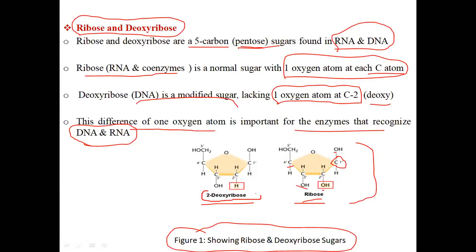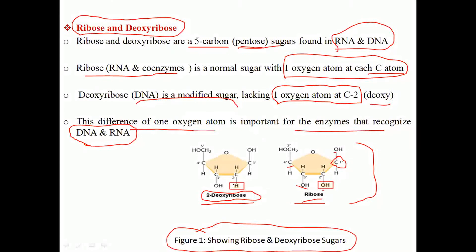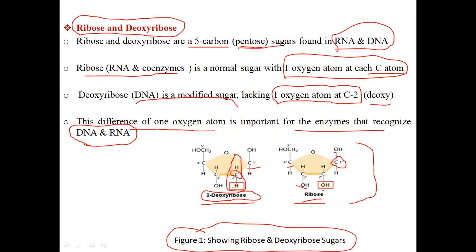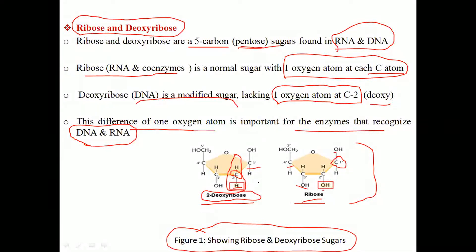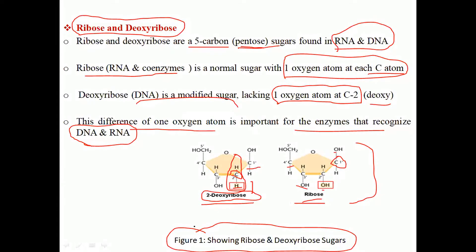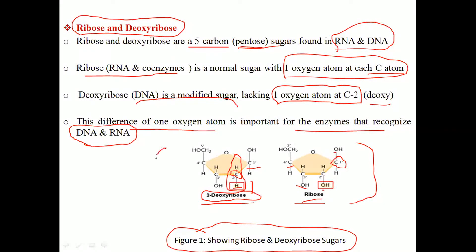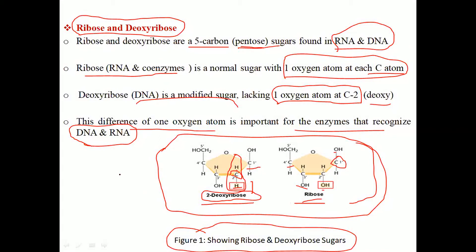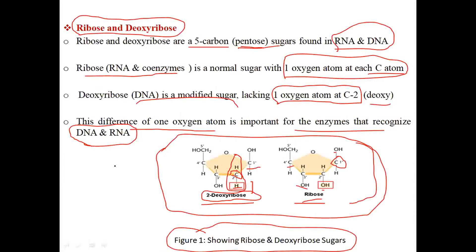Deoxyribose is a modified sugar and it lacks one oxygen atom at carbon number two. We can see that carbon number two in deoxyribose lacks one oxygen atom. Because of the absence of this oxygen, it is called deoxyribose. So the key difference is that ribose is a normal sugar while deoxyribose is a modified sugar lacking one oxygen atom at carbon number two.